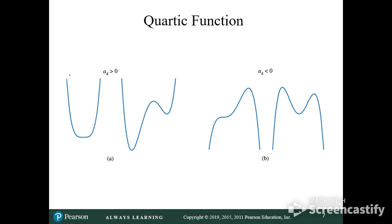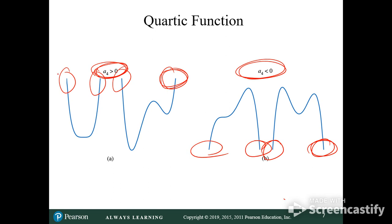The quartic function. Starts up, ends up. Starts up, ends up. Because if it's a positive first term coefficient, it's going to end up. If it's a negative first term coefficient, it's going to end down. And since it's an even power, start down, end down. Even power over here, start up, end up.